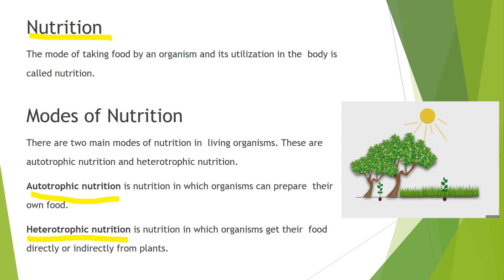Now what is autotrophic mode of nutrition? There are certain organisms which are green in color and they are able to synthesize their own food. That is done by the process called photosynthesis and this is seen in green plants. So green plants show autotrophic mode of nutrition because they can prepare their own food. In heterotrophic mode of nutrition, the organisms cannot prepare their own food — they have to depend on autotrophs, like animals are dependent on plants.